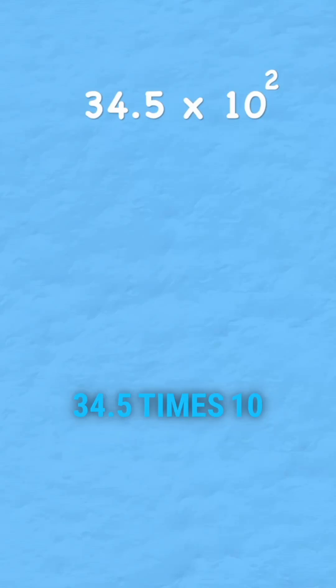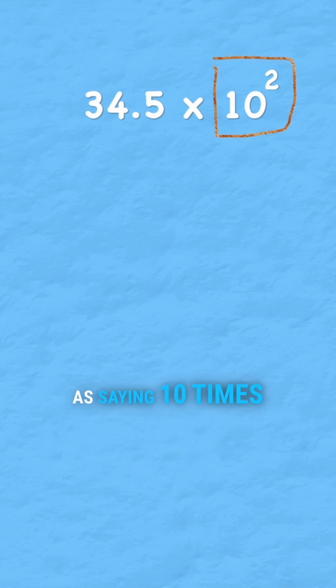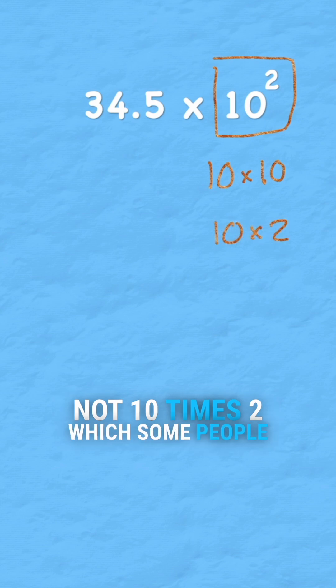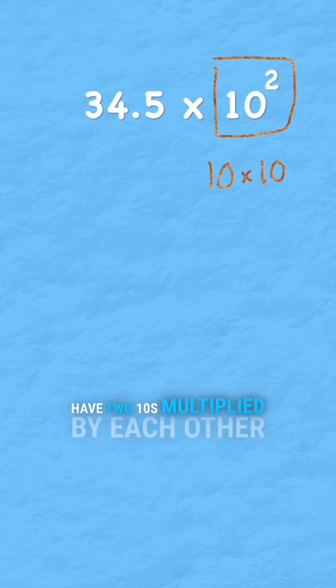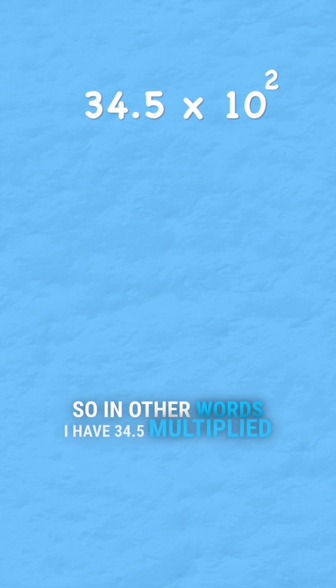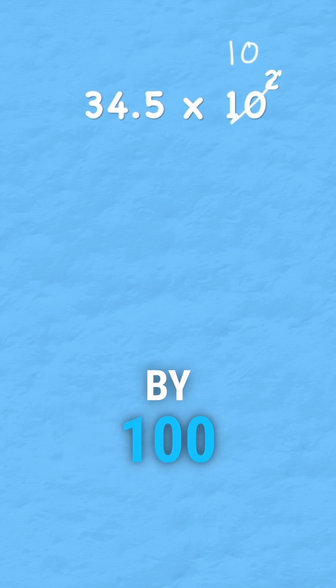Can you solve this question: 34.5 times 10 to the power of 2? Well, it's simple. 10 to the power of 2 is the same as saying 10 times another 10, not 10 times 2, which some people do—that would be a mistake. 10 to the power of 2 means we have two 10s multiplied by each other, so in other words, I have 34.5 multiplied by 100.